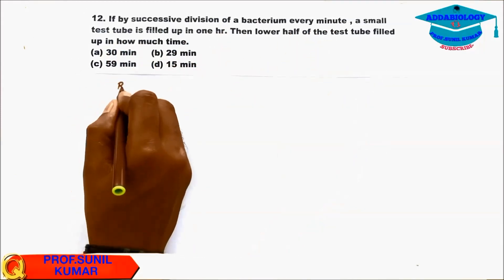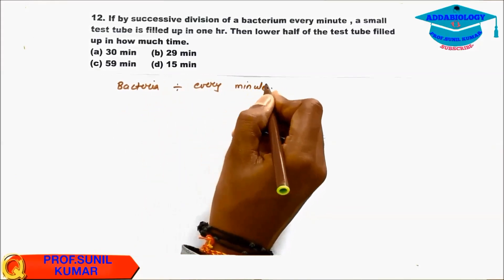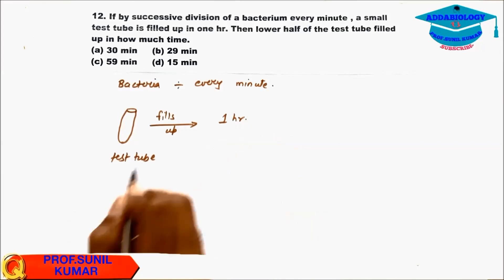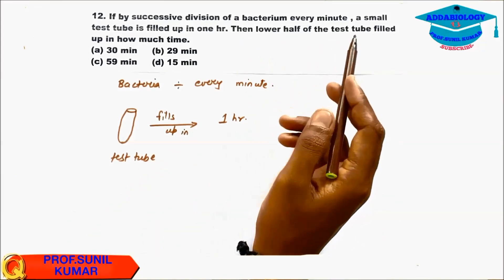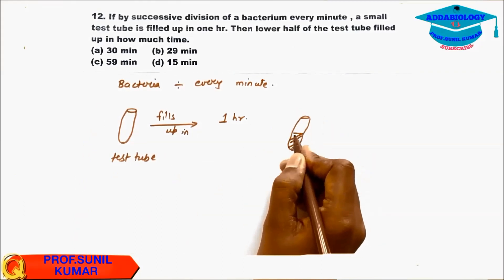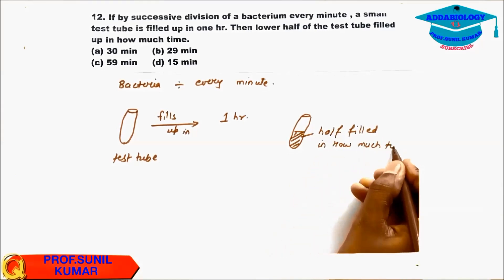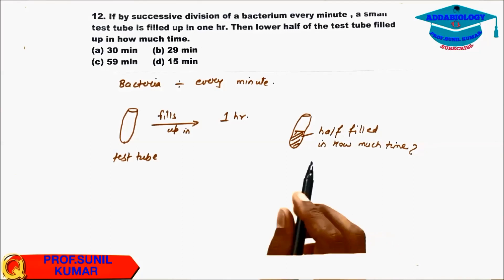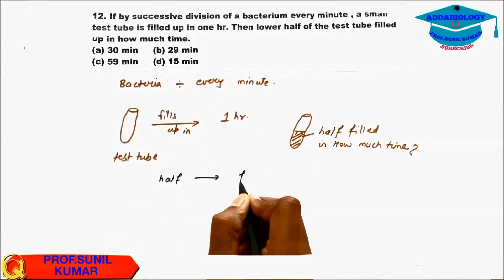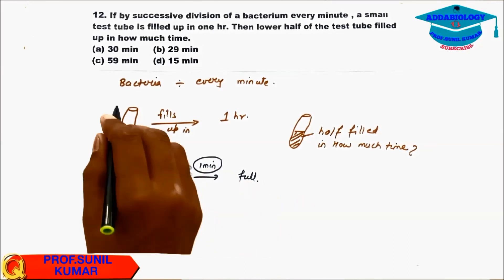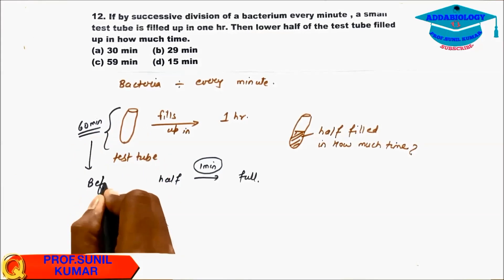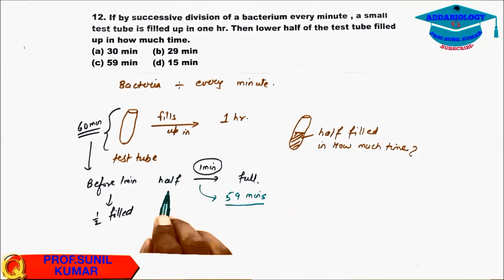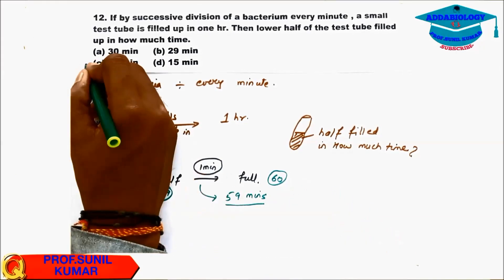Question 12: A bacterium divides every minute. A test tube fills up in 1 hour (60 minutes). How much time is required to fill the lower half of the test tube? Since every division doubles the number, going from half-full to full takes just 1 minute. Therefore, the test tube is half-filled at 59 minutes. The answer is 59 minutes, because in the 60th minute it doubles to full.